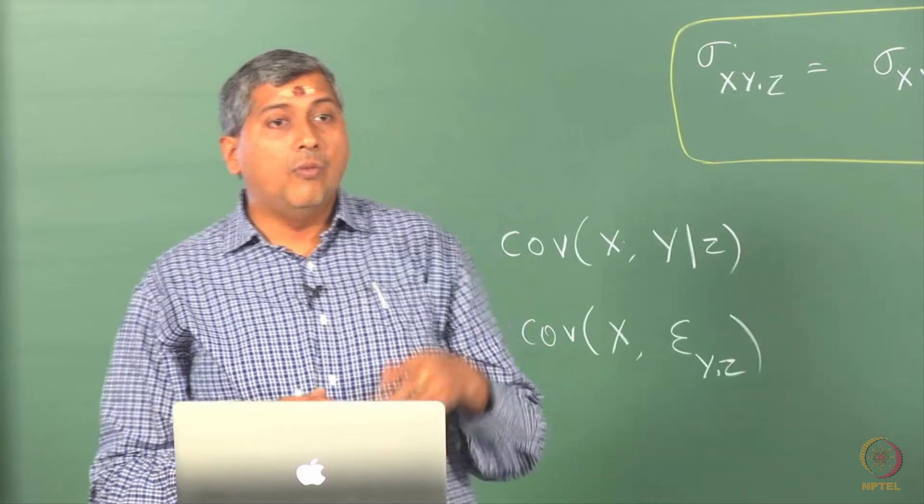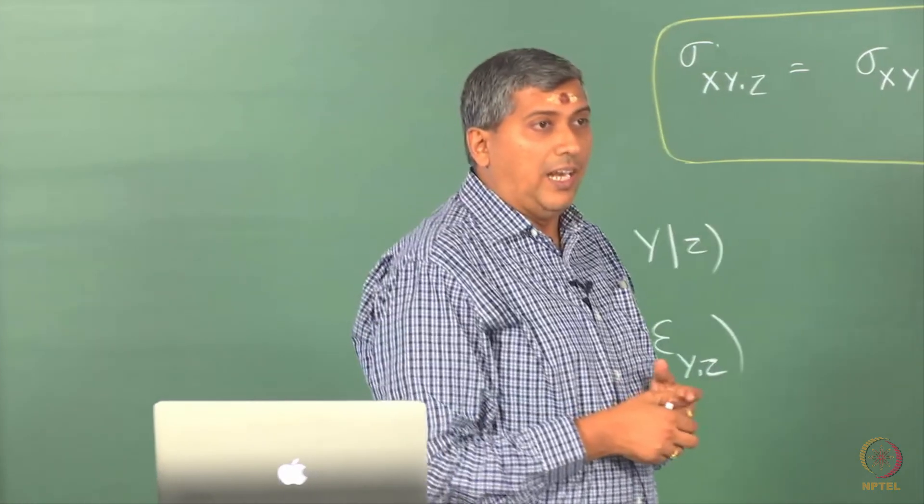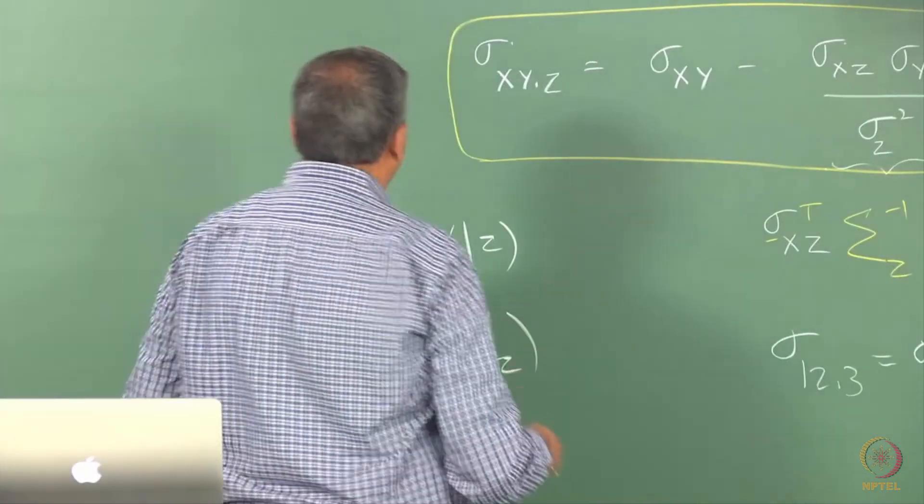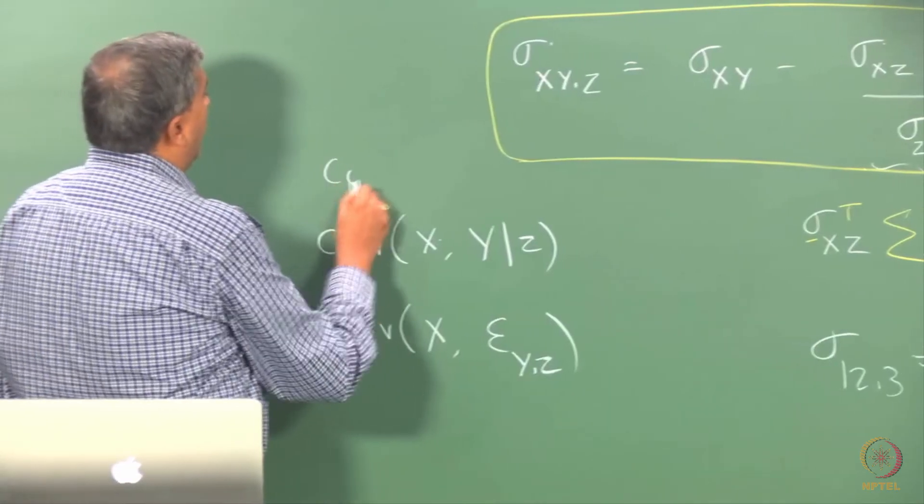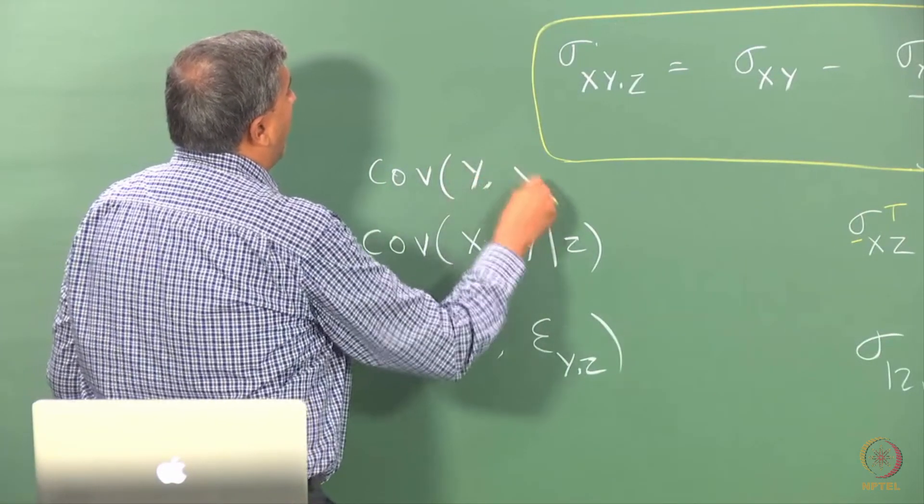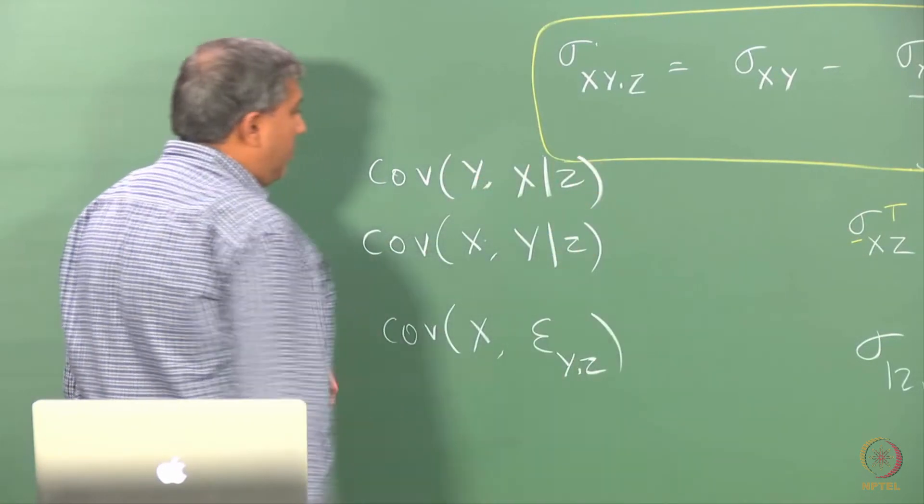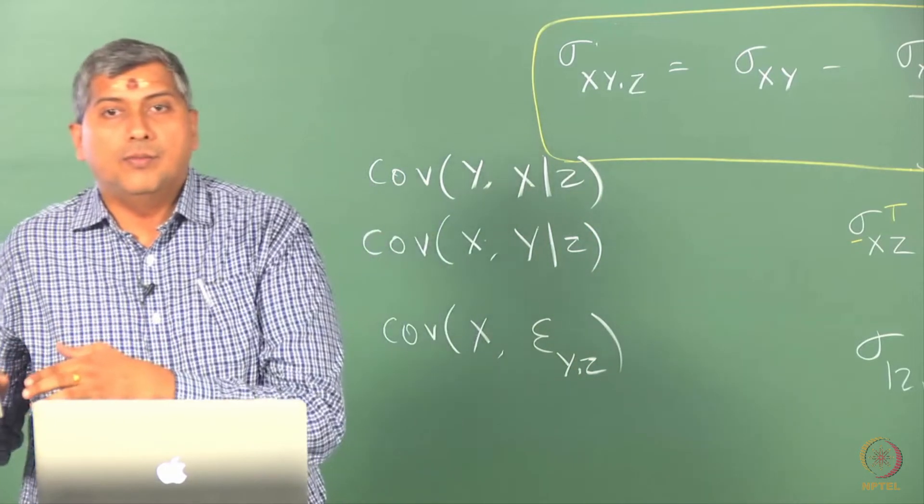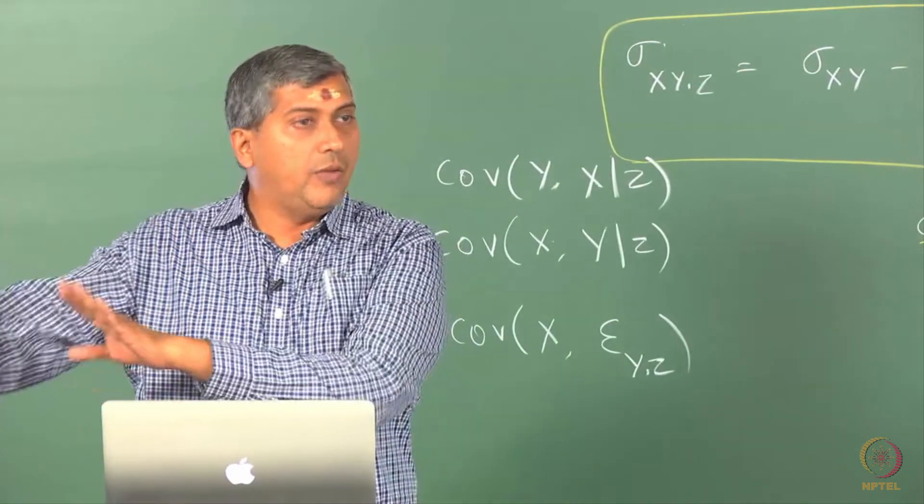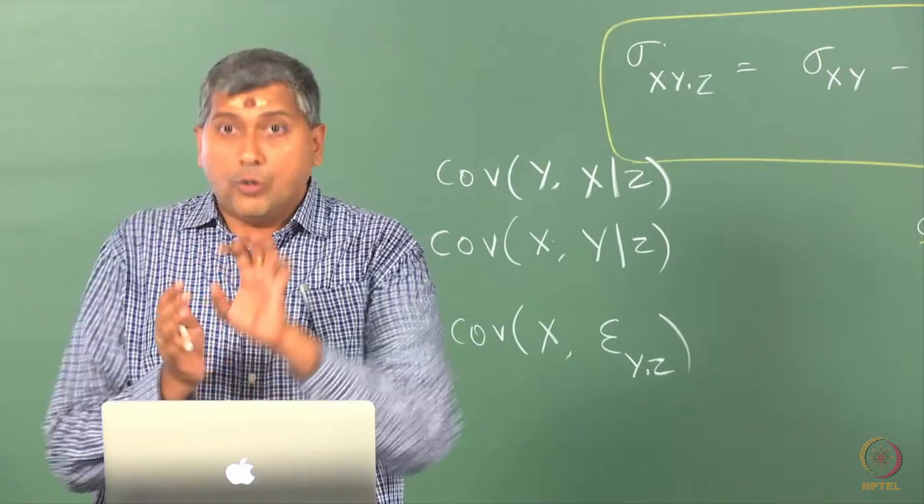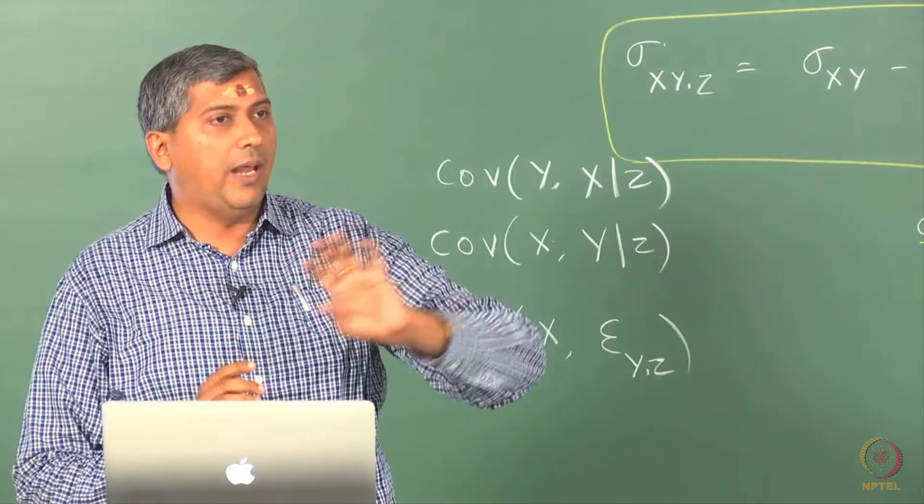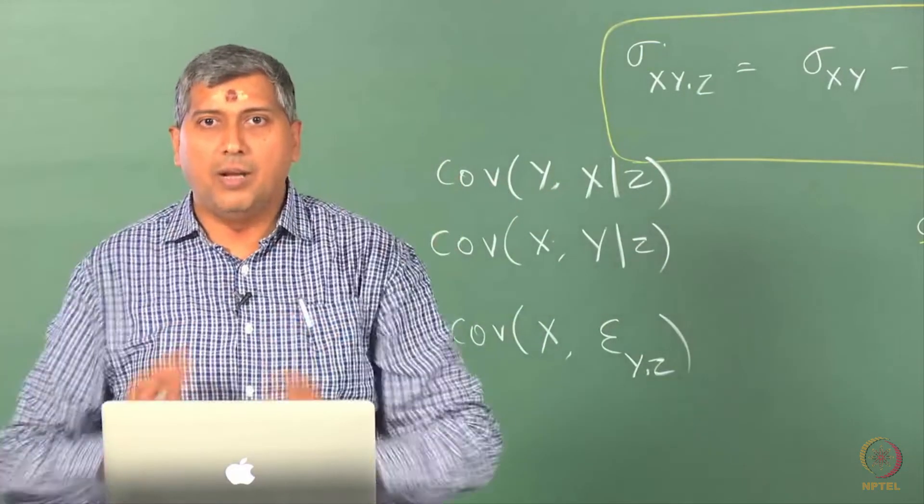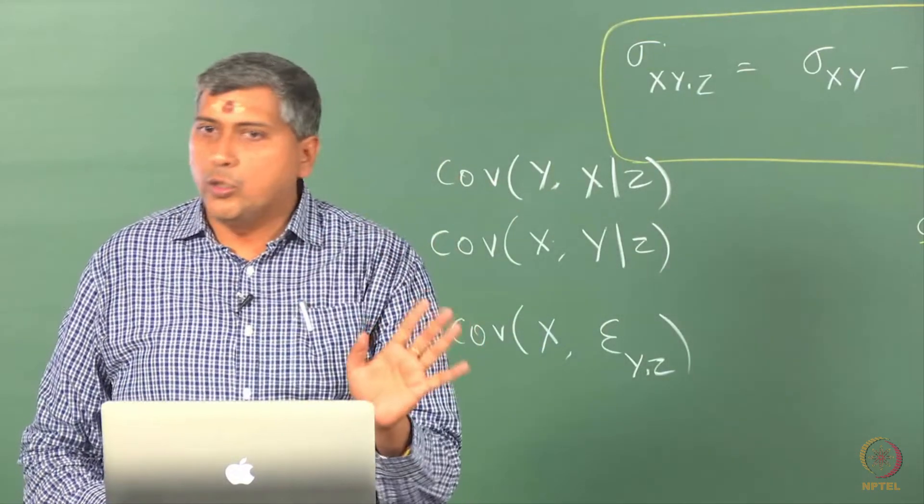So it tells us what is the unique information that x contains about y that cannot be explained by any other variable. Whereas the semi-partial correlation, suppose you look at covariance between, for example, y and x given z, will tell me how much x can, that is when you discount the effects of z, whatever is left out, how much that can uniquely explain, that can explain the entire variability in y.